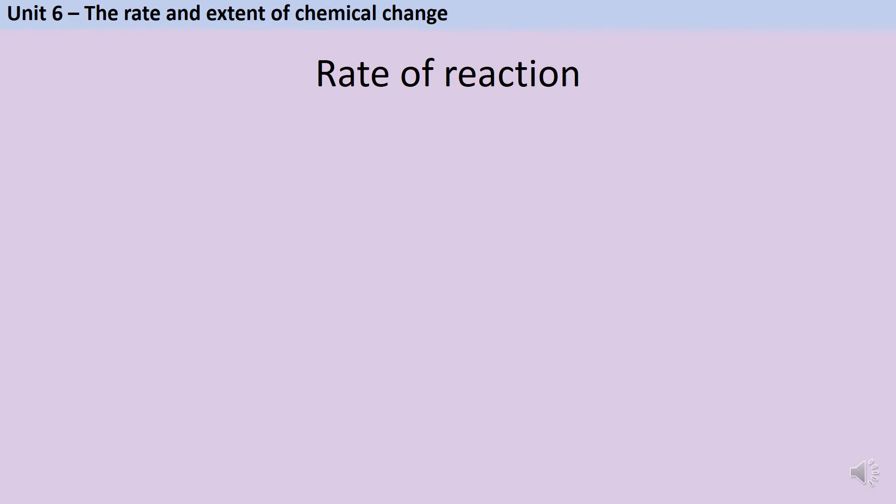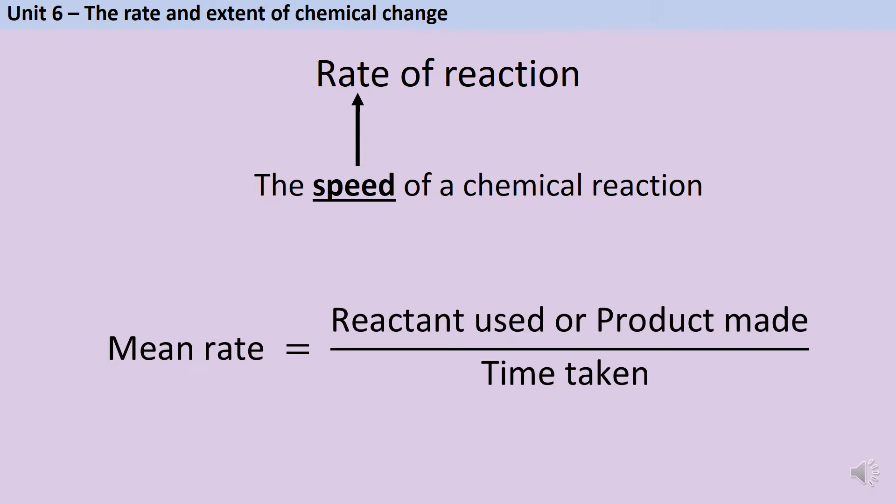When we talk about the rate of a reaction, we mean the speed that it's proceeding at. There are two ways that we can calculate this. Either we can look at the mass or volume of a reactant being used up, or we can look at the mass or the volume of a product being made. And for each of these approaches, we then need to divide this by the time taken for this to occur.